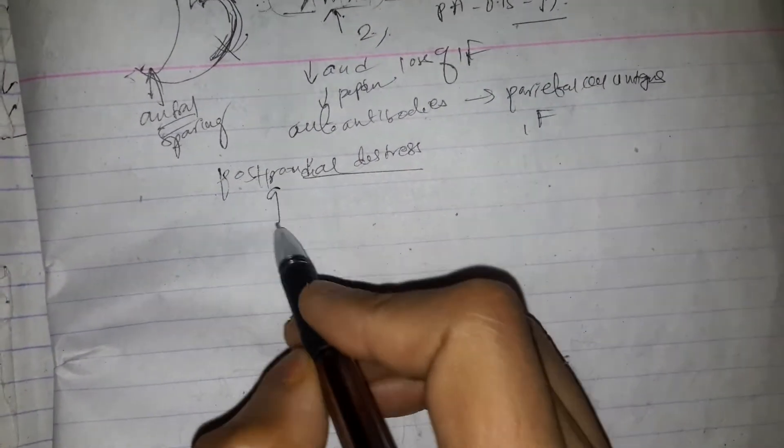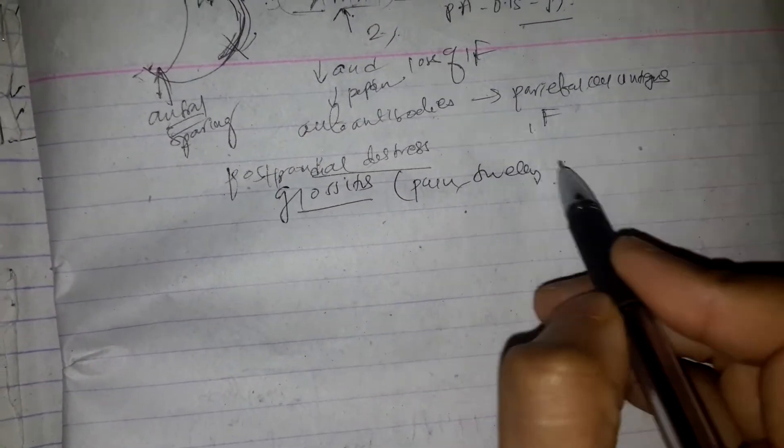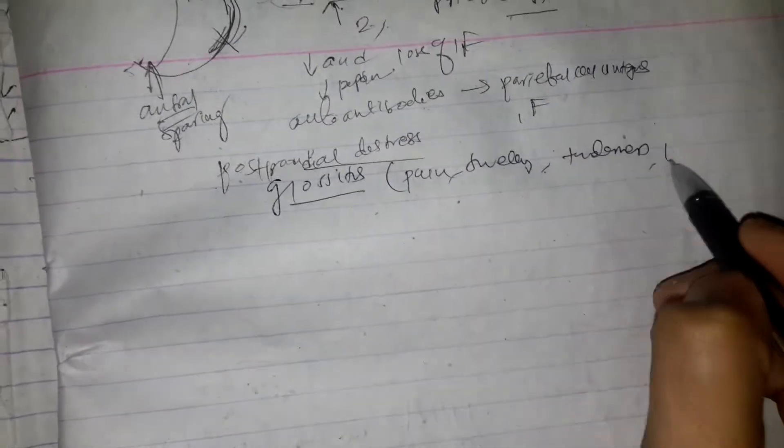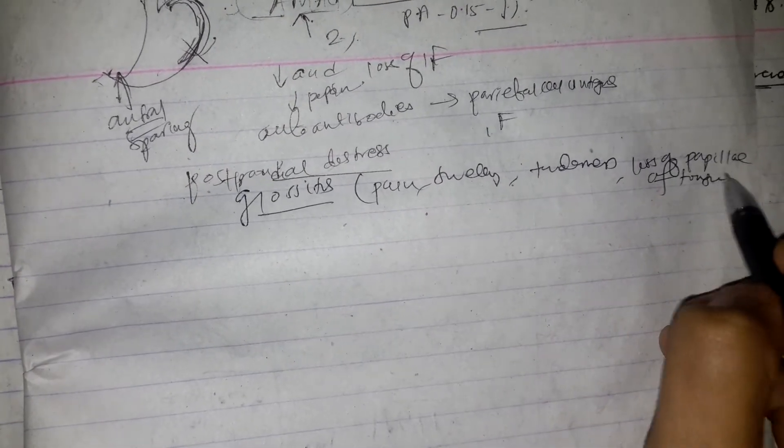Patients with B12 deficiency usually have vague or non-specific symptoms like fatigue, irritability, and cognitive decline, which are likely due to anemia. B12 deficiency can cause glossitis, including pain, swelling, tenderness, and loss of papillae of the tongue. B12 deficiency can also cause subtle neurologic, cognitive, and psychiatric changes. The most common neurological manifestation is symmetric paresthesia or numbness and gait problems.